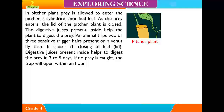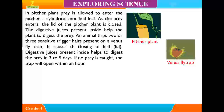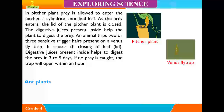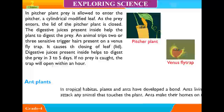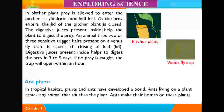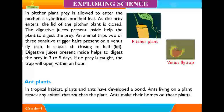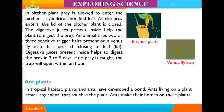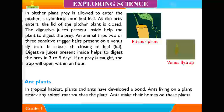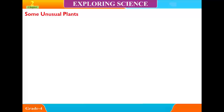Ant Plants. In tropical habitats, plants and ants have developed a bond. Ants living on a plant attack any animal that touches the plant. Ants make their homes on these plants.